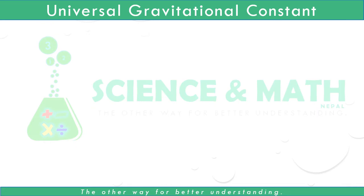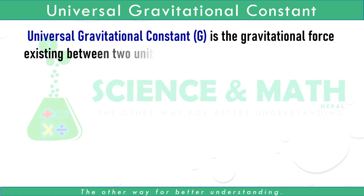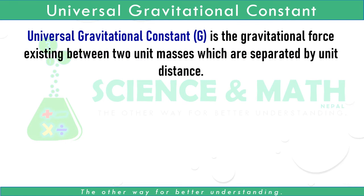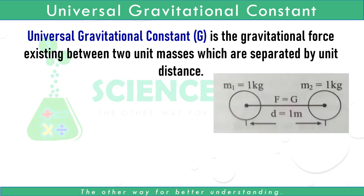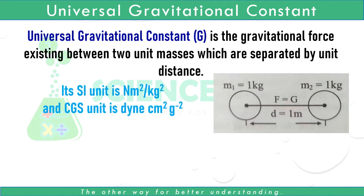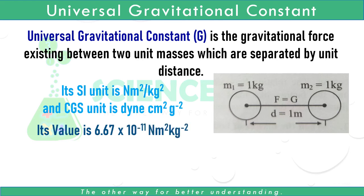Let's talk about the Universal Gravitational Constant. Universal Gravitational Constant G is the gravitational force existing between two unit masses separated by unit distance. In the figure, mass of one body M₁ = 1 kg, mass of the other body M₂ = 1 kg, and distance between their centers D = 1 meter. In such a case, the gravitational force is equal to the Universal Gravitational Constant. Its SI unit is N·m² / kg², CGS unit is dyne·cm² / g², and its value is 6.67 × 10⁻¹¹ N·m² / kg².